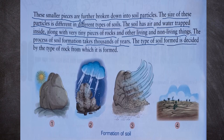We can see in this picture the formation of soil. First there is a huge rock and the sun is shining, then there is rain breaking the rock, and then wind also breaking the rock. Finally we can see soil with some plants growing in it. This is how soil is formed.